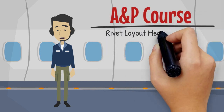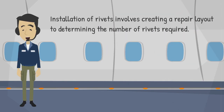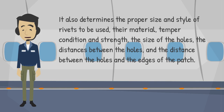Welcome to this training session on rivet layout measurements. Installation of rivets involves creating a repair layout to determine the number of rivets required. It also determines the proper size and style of rivets to be used, their material, temper condition and strength, the size of the holes, the distances between the holes, and the distance between the holes and the edges of the patch.